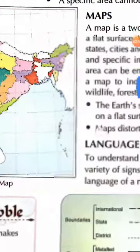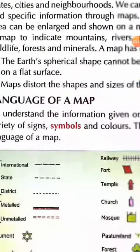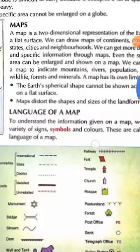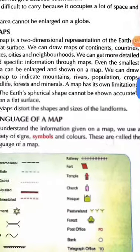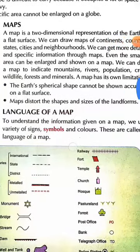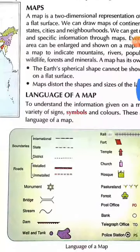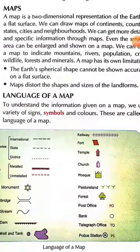After that, we are going to learn about the language of a map. To understand the information given on a map, we use a variety of signs, symbols and colors. These are called the language of a map. When we draw a map, we use these symbols, signs and colors to understand that particular area.